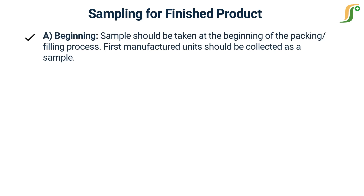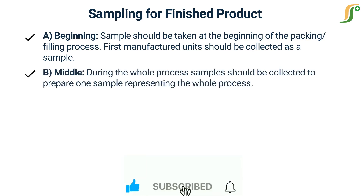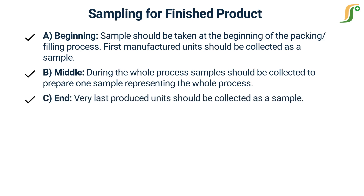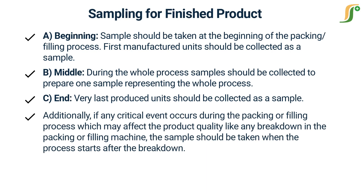During packing or filling, samples should be taken at the following intervals. Beginning: a sample should be taken at the beginning of the packing or filling process; first manufactured units should be collected as a sample. Middle: during the whole process, samples should be collected to prepare one sample representing the whole process. End: the very last produced units should be collected as a sample. Additionally, if any critical event occurs during the packing or filling process which may affect product quality, such as any breakdown in the packing or filling machine, a sample should be taken when the process restarts after the breakdown.